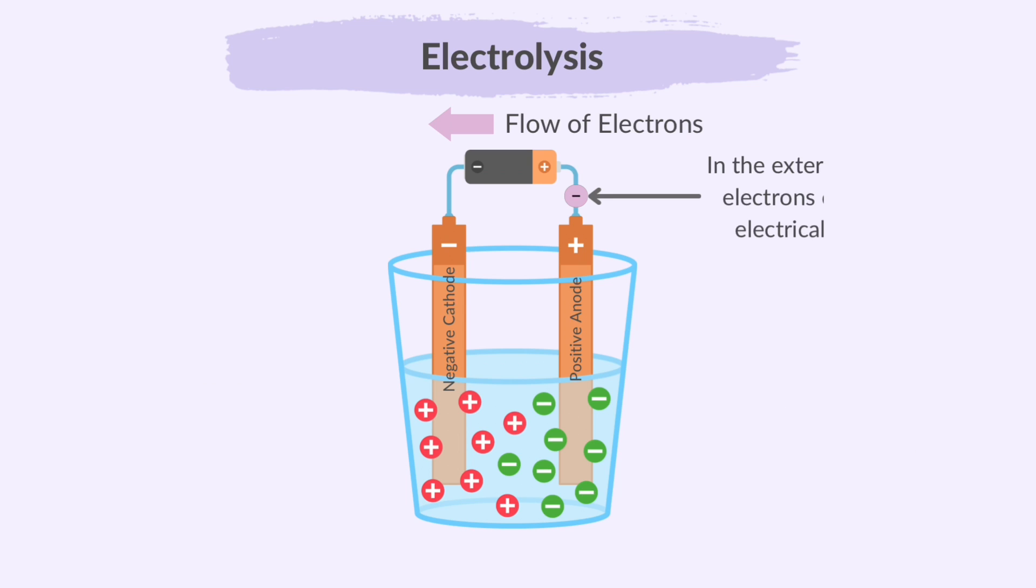When the current flows in the electrodes and wires, it is the electrons that carry the electrical charge. When the current flows in an electrolyte, it is the ions that move and carry the electrical charge.